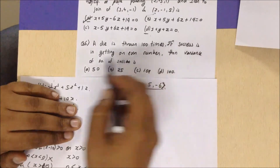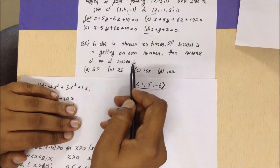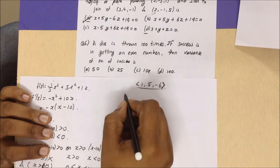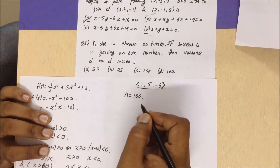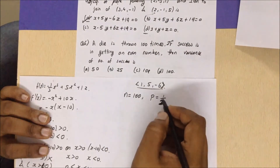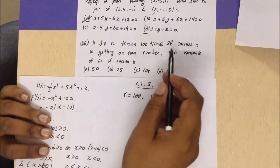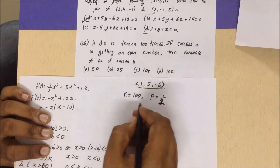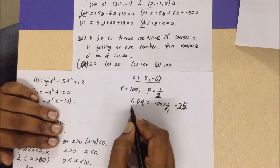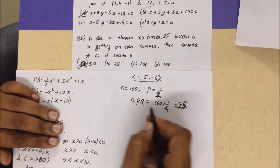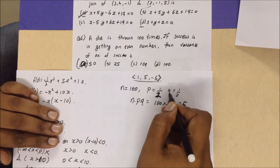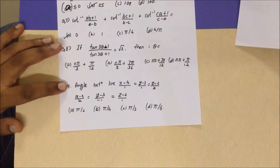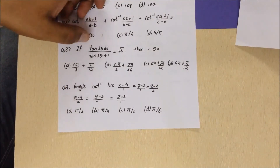A die is thrown 100 times; success is getting an even number. Find the variance of the number of successes. This is a binomial distribution problem with n = 100 and p = 1/2. Variance = npq = 100 × (1/2) × (1/2) = 100/4 = 25. The answer is option B.